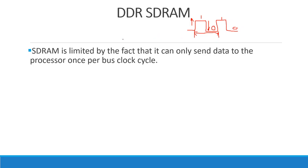With normal SDRAM, we have one clock cycle and we send one data packet. Then another clock cycle, another data packet — and so on. SDRAM can only send data to the processor once per bus clock cycle.